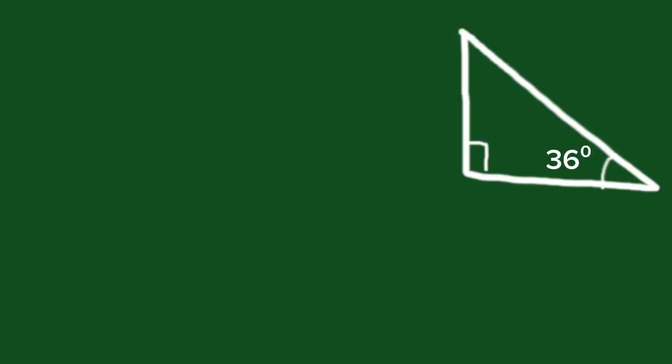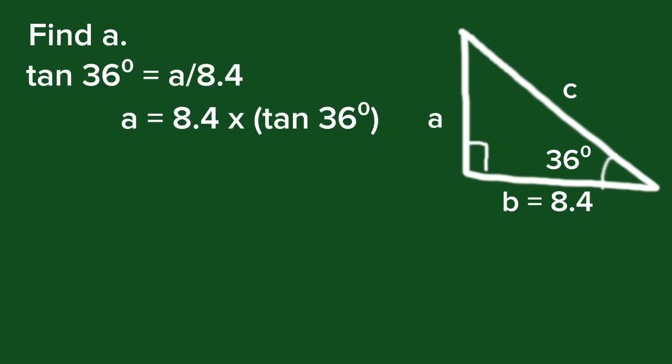Let's have another example. Given a triangle where side b equals 8.4 and the angle is 36 degrees, we are going to find the lengths of a and c. To find a, we use tangent: tangent 36 degrees equals a over 8.4. So a equals 8.4 times tangent 36 degrees. To find the value of tangent 36 degrees, we use the calculator.